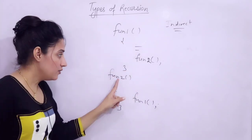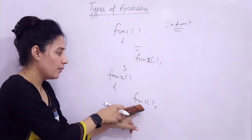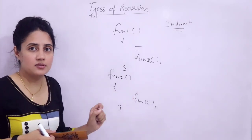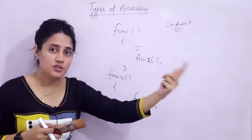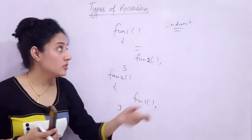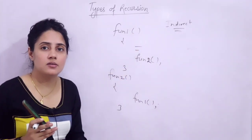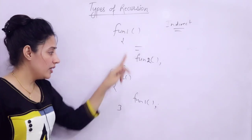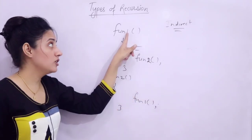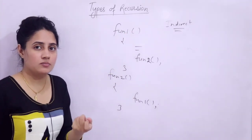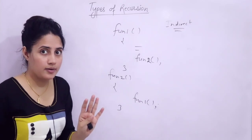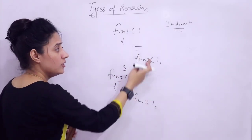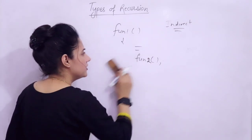More precisely: if function1 calls function2, and function2 calls function1 directly or indirectly, then this is indirect recursion. In function1 we call function2, but in function2 we again call function1 — so ultimately function1 is calling itself, but through function2 indirectly. Both function1 and function2 are known as indirect recursive functions. You can have 3, 4, or 5 functions calling each other mutually in a circular fashion — that is also indirect recursion.